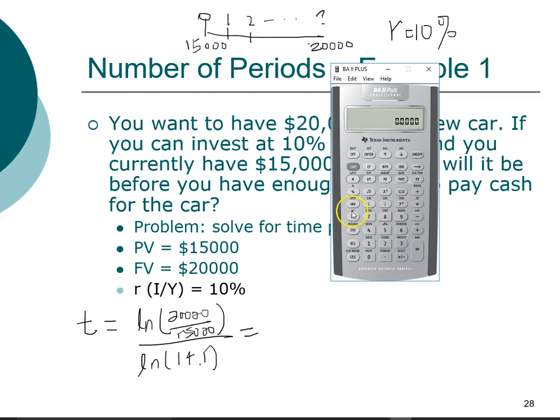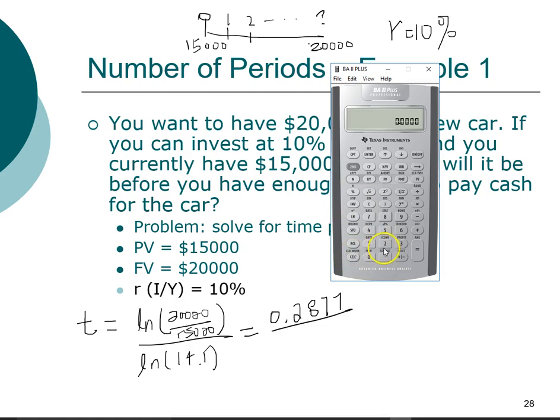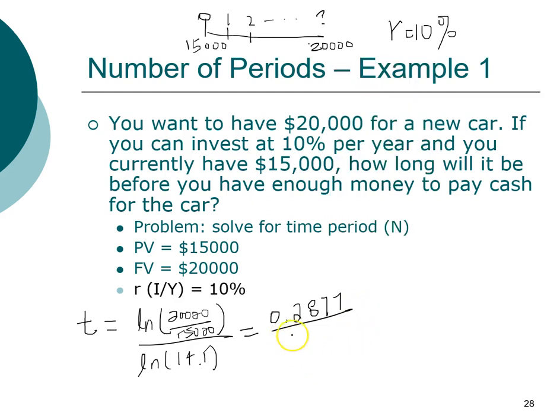We have $20,000 divided by $15,000, and we want to take the natural log of that, which gives us 0.2877 as our numerator. For the denominator we have 1 plus 10%, so that's 1 plus 0.1 or 1.1, and we want to take the natural log of that, which is 0.093.